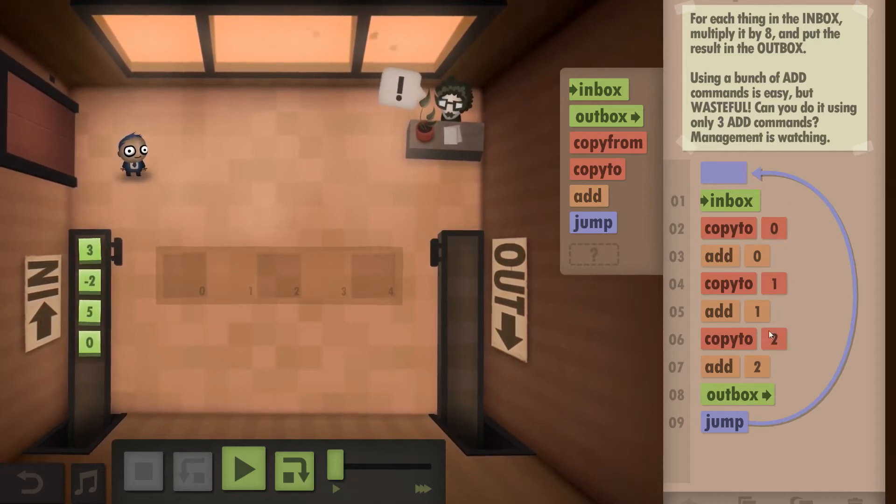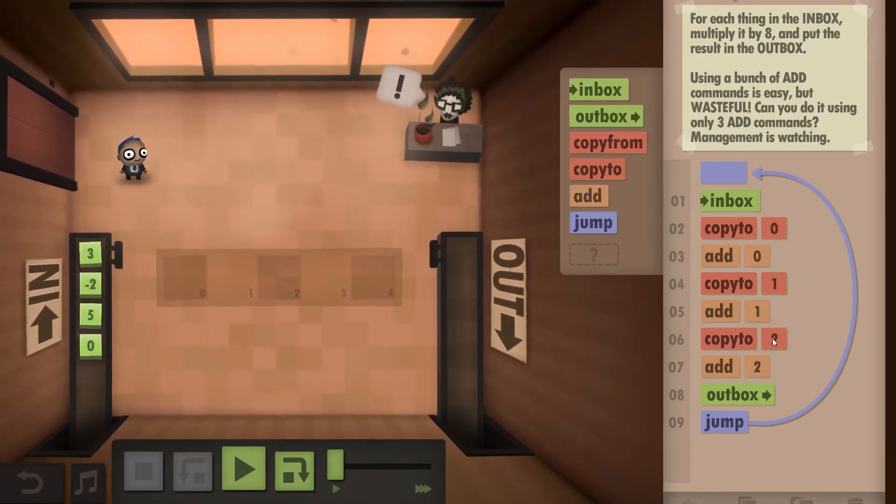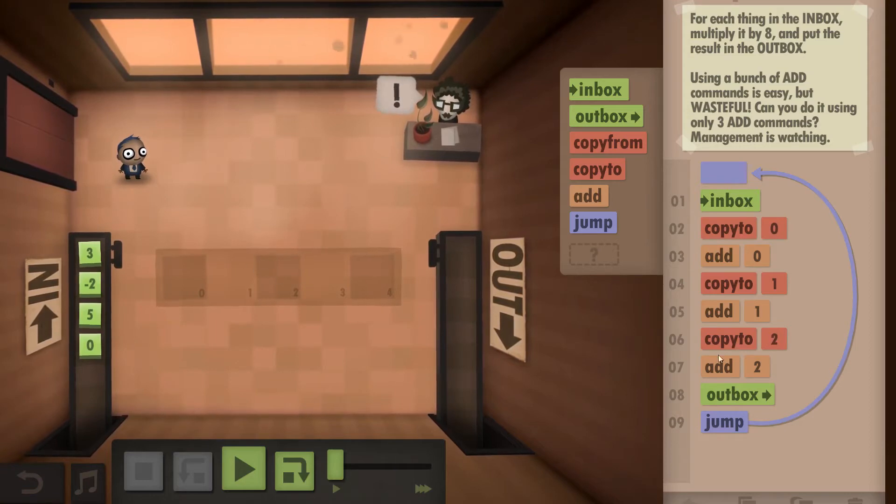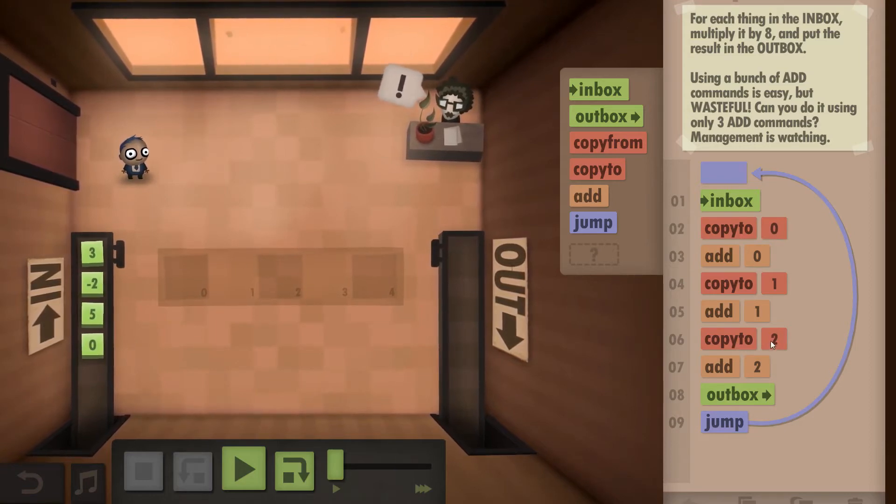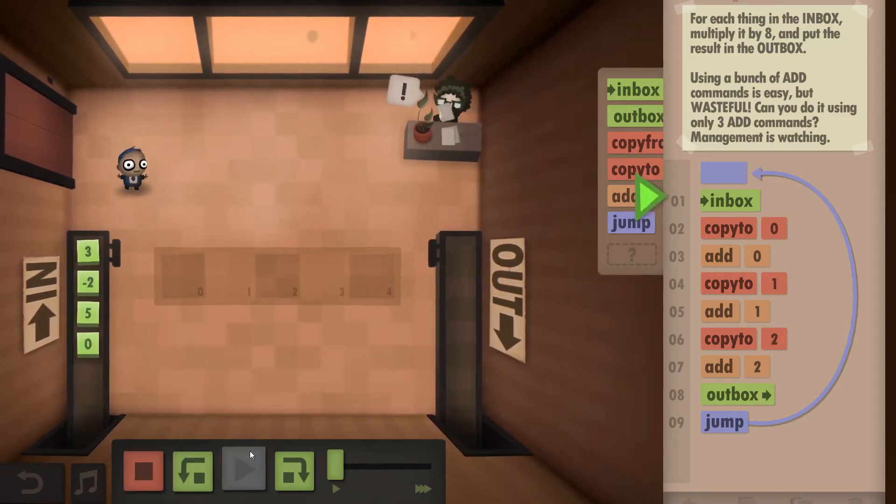Unfortunately I don't have any comments in here, otherwise I would have probably written that. But then you add the times 4 to itself to get the times 8 and then outbox it.